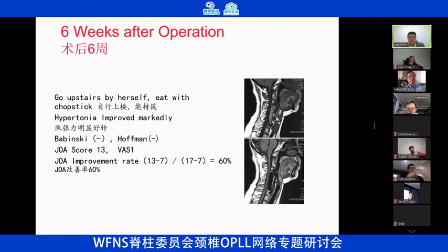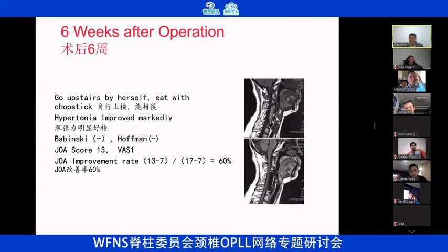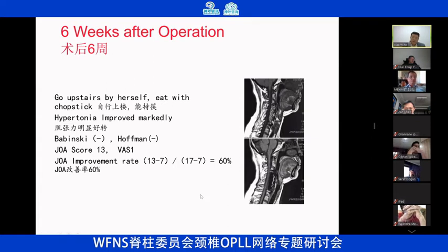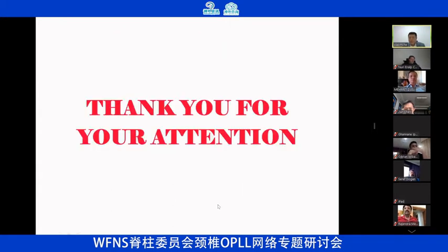After six weeks post-operation, we followed the patient. The patient could go upstairs by herself and eat with chopsticks. Spasticity improved markedly, and Babinski and Hoffmann signs both turned negative. The JOA scale improved to 13, and VAS decreased to 1. The JOA improvement rate is 16%. Currently the patient is doing well and is quite satisfied with the outcome. This is my case. Thank you.